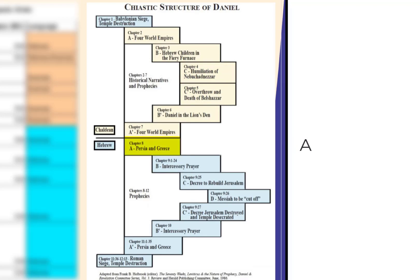In chapters 8 and 11, the A section talks about the Persian and Greek empires. The B portion in chapters 9 and 10 talks about intercessory prayer.